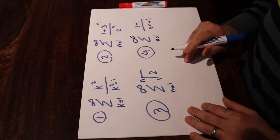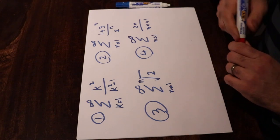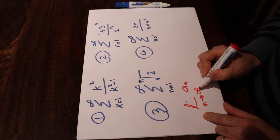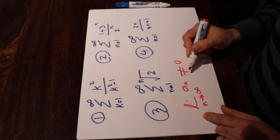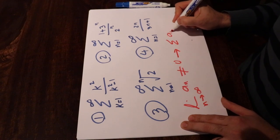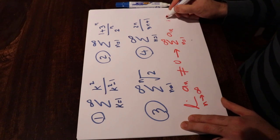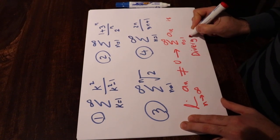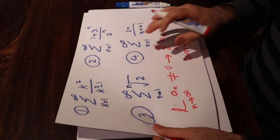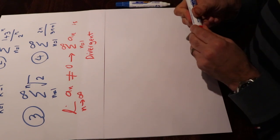The reason I chose these four series is that using the same test you can evaluate all of them. That test states that if the limit of aₙ when n goes to infinity is not equal to 0, or if it does not exist, then you can conclude that the series sigma aₙ from 1 to infinity is divergent. Now I will show you how to use this test to evaluate whether or not the above series are convergent.